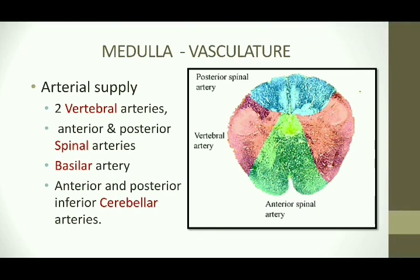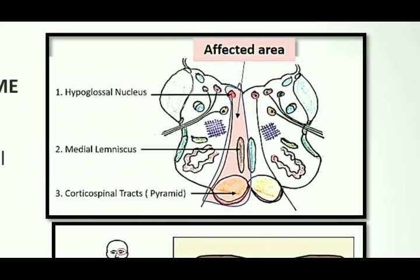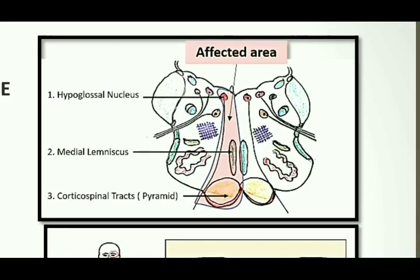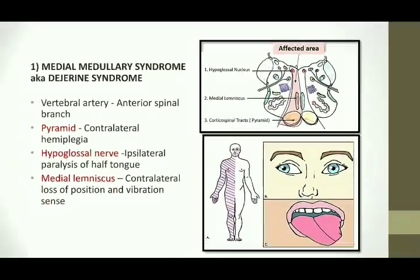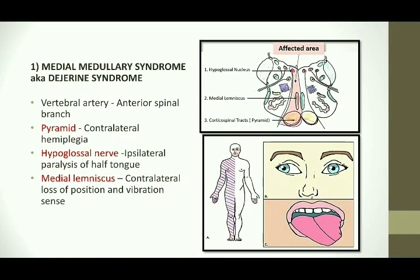Showing the vasculature of the medulla, the arterial supply is by the two vertebral arteries, the anterior and posterior spinal arteries, the basilar artery, and the anterior and posterior inferior cerebellar arteries. The first syndrome is the medial medullary syndrome or the Dejerine syndrome. The areas affected in this syndrome are the hypoglossal nucleus, the medial lemniscus, and the pyramids. It is mainly caused by occlusion of the anterior spinal branch of the vertebral artery.